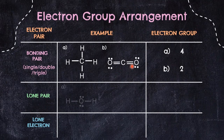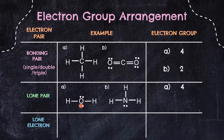For the water molecule, we have 2 single bonds contributing to 2 electron groups, and each lone pair contributes one electron group. So 2 plus 2 gives 4 electron groups. For ammonia, there are 3 single bonds together with 1 lone pair, giving 4 electron groups in total.